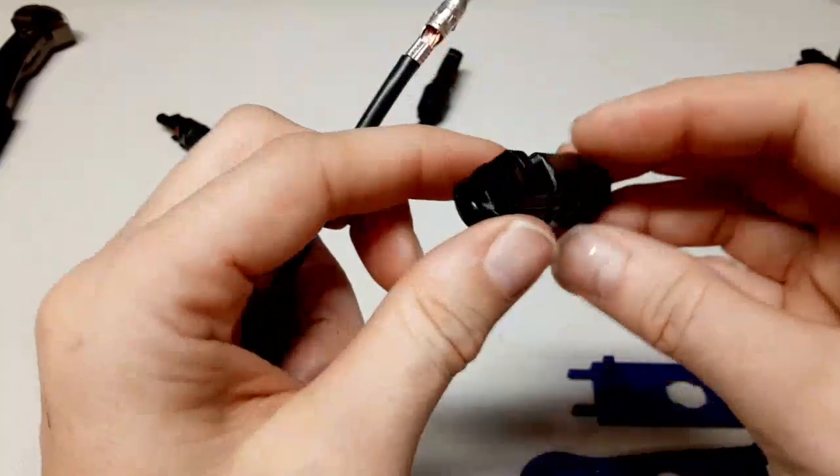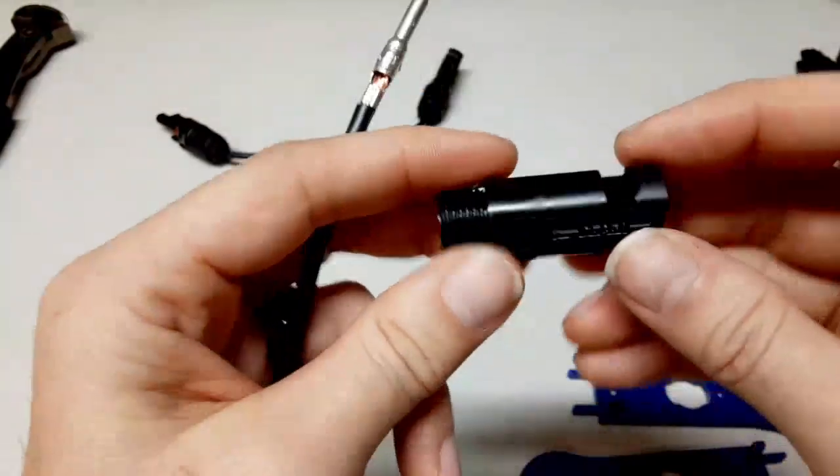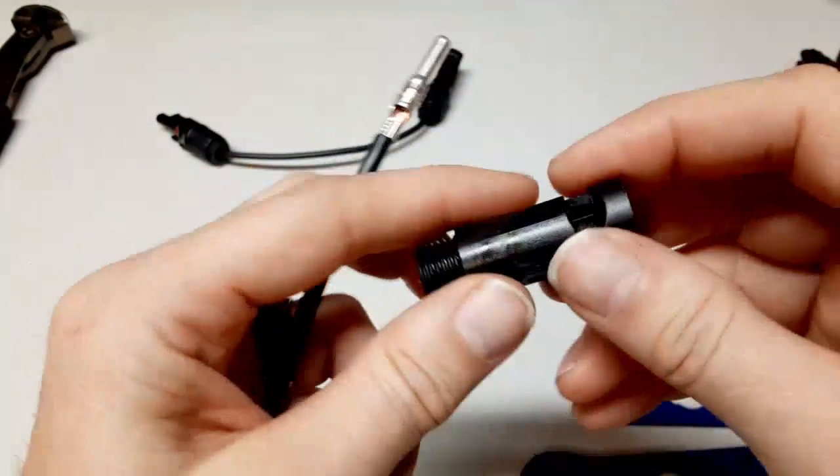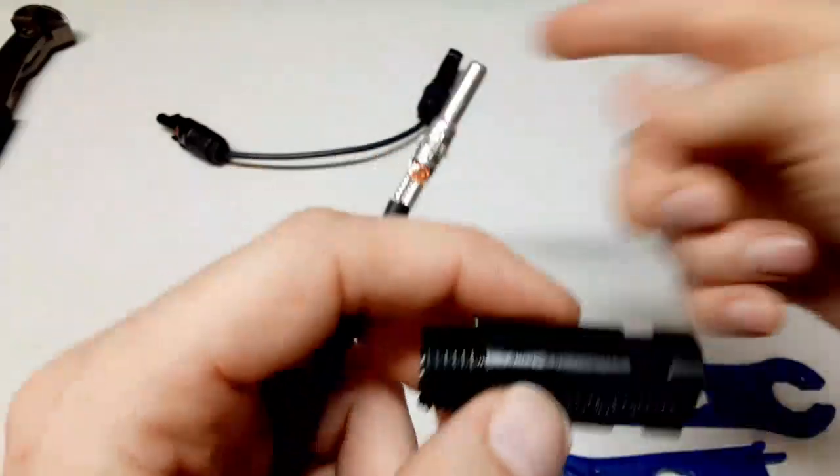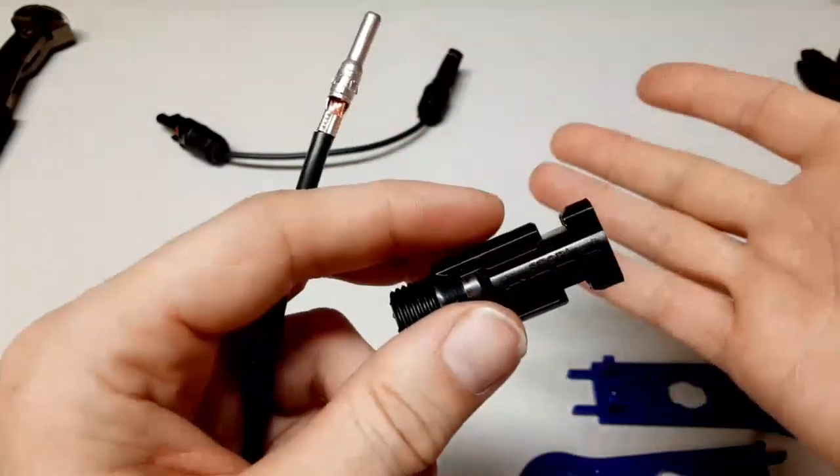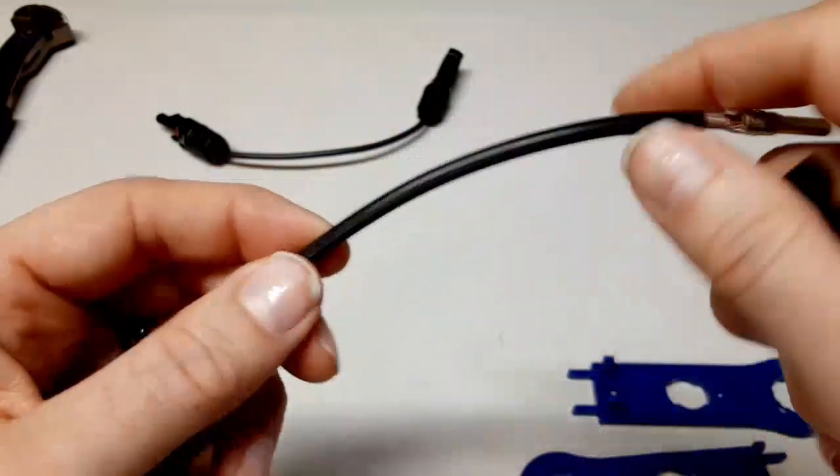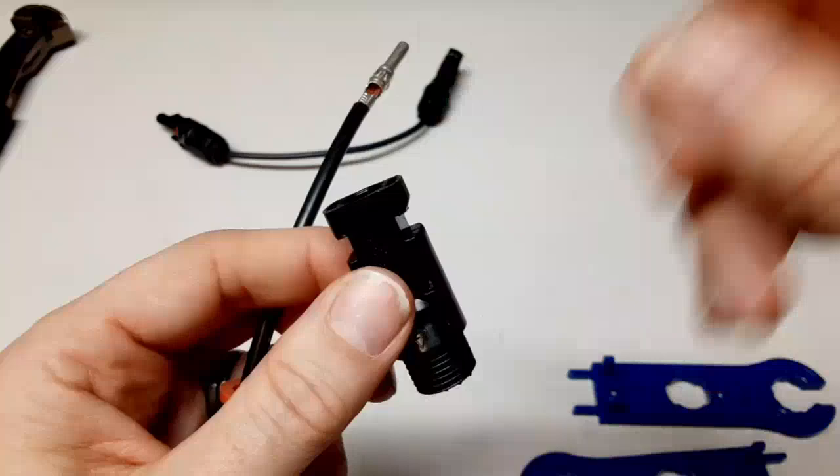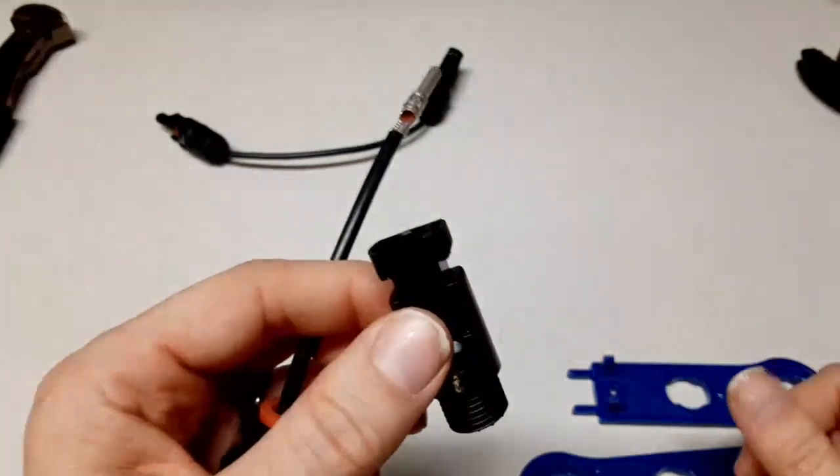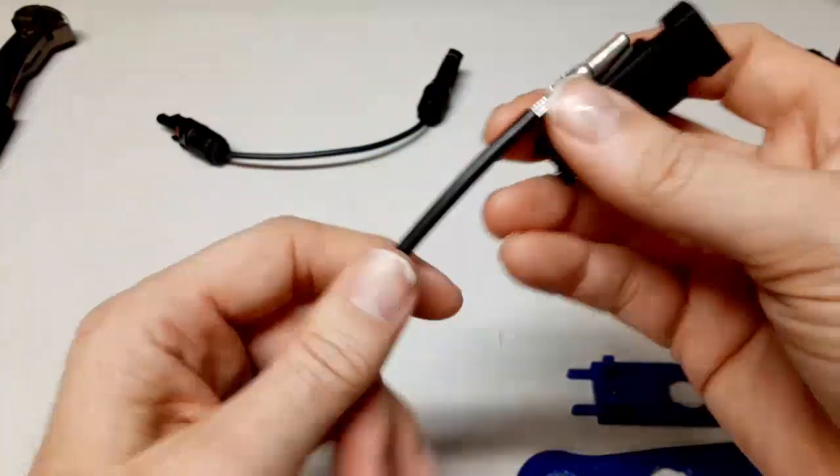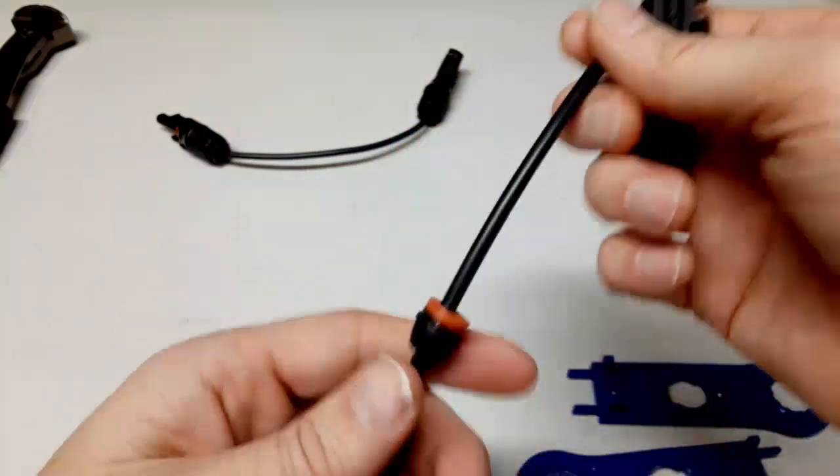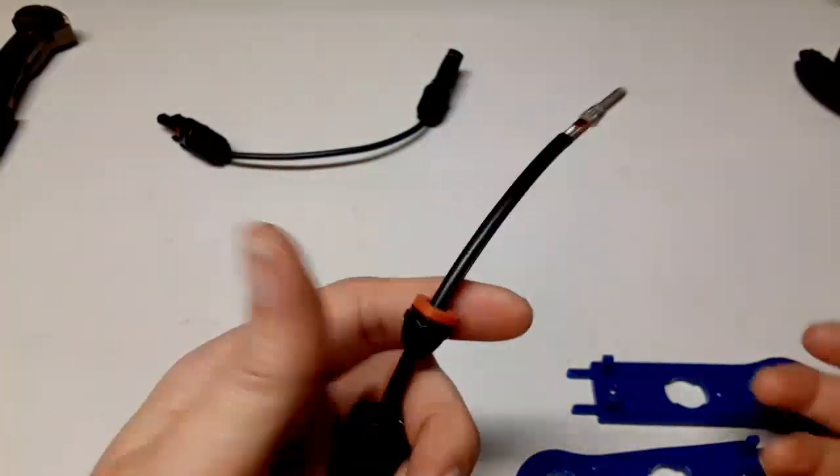Then you basically take the other one, which in my instance this would be the negative depending on your solar panels - it could be different. It's easy to get mixed up positive and negative. As long as you know what wires are coming from the panels or what the ports are, doesn't matter as long as they match up to what you need going into the device you're trying to charge. They'll be different on every system.